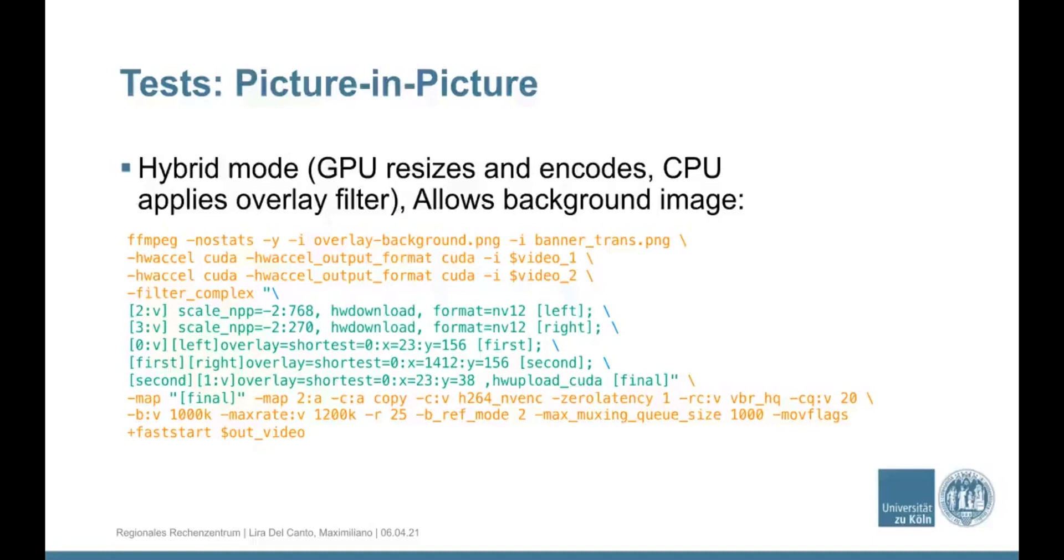In this case is a hybrid mode. Why a hybrid mode instead to use the only CPU mode? Because in this case, the CPU has very bad time using this type of processing. It's very slow when you try to overlay a lot of videos at the same time.